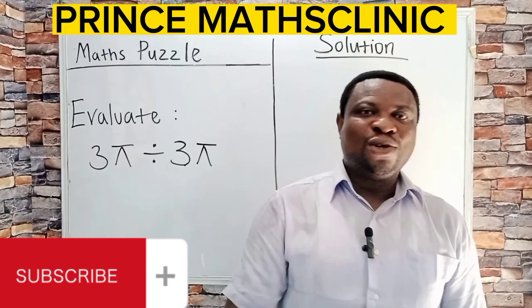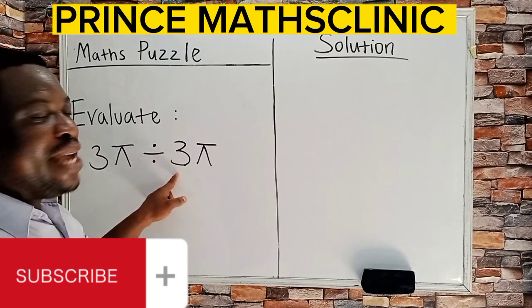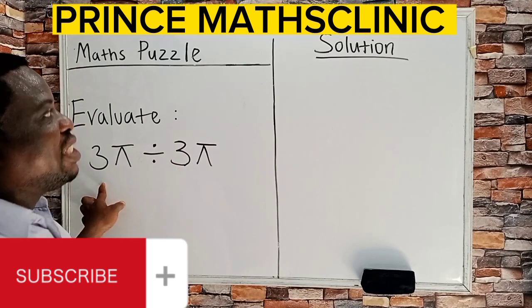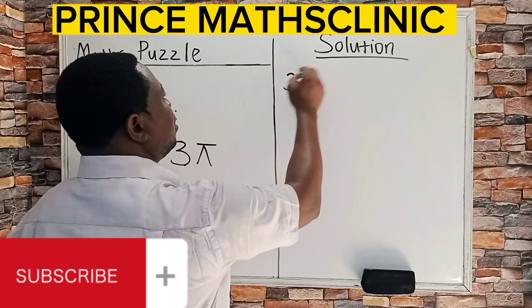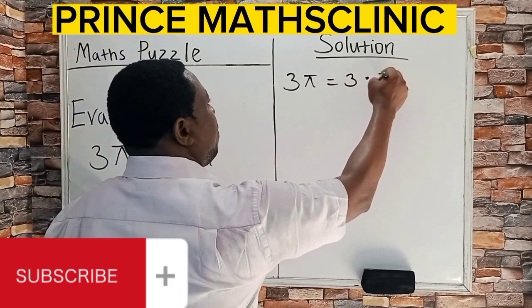Let's go right into the solution. This is 3π divided by 3π. This is an algebraic statement in the sense that 3π means 3 times π.